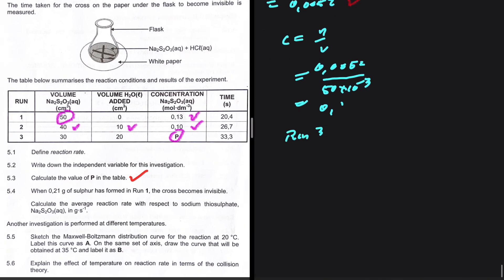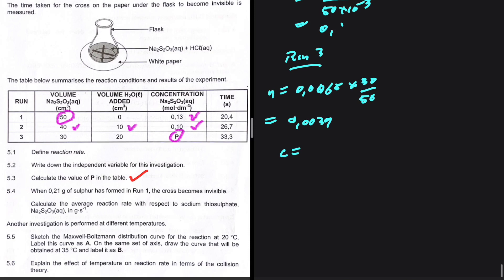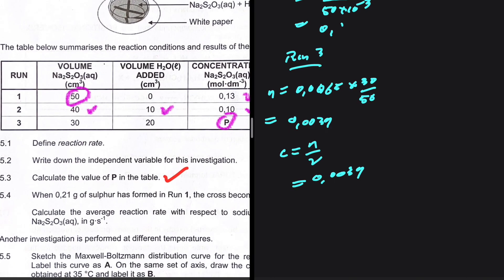For p, we first need the number of moles in run three. Those moles equal 0.0065 multiplied by 30 divided by 50, giving 0.0039. The concentration in run three is number of moles divided by volume. The volume is additive: 30 plus 20 equals 50, so we divide by 50 × 10⁻³.